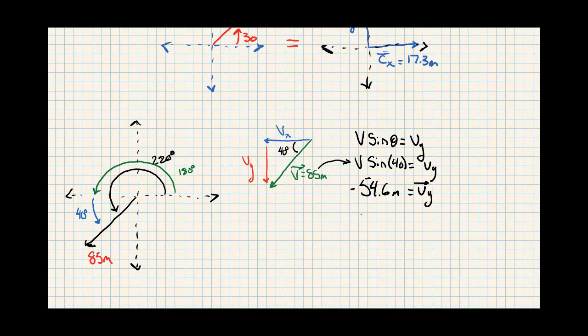A little trick though is what if we took 85 sine of, and instead of 40, we take that whole 220 equals Vy. That will automatically, because the sine value will be negative, will automatically give us negative 54.6 meters equals Vy.